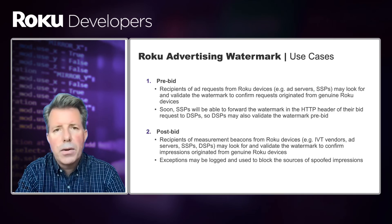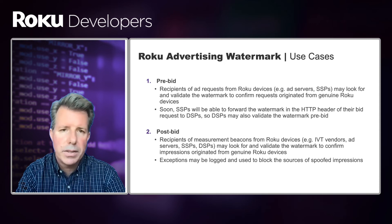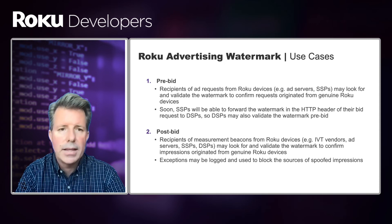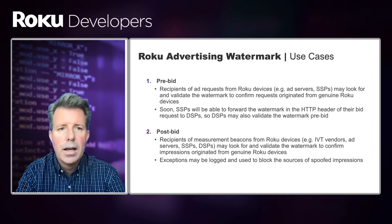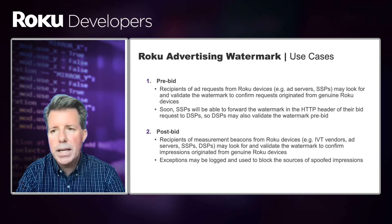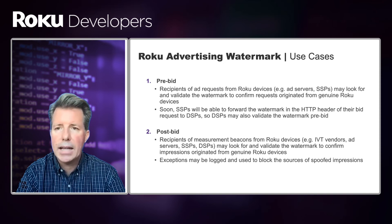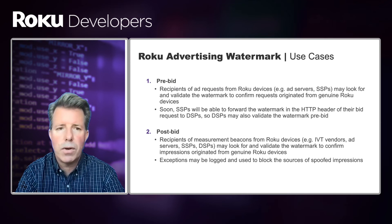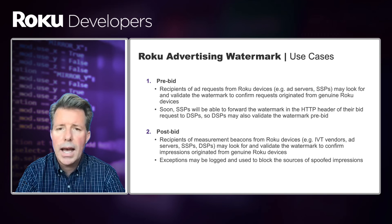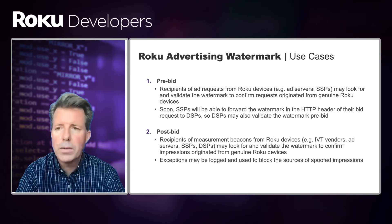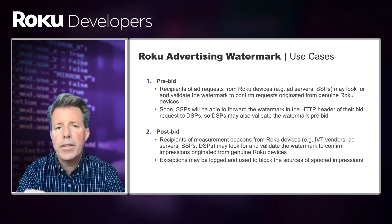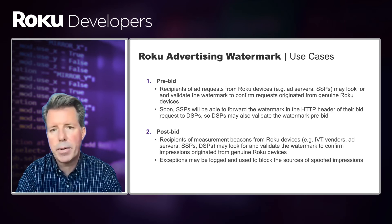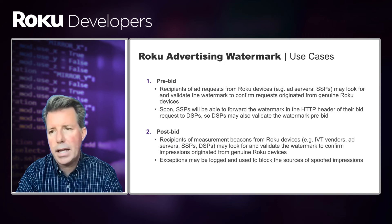What are the use cases for the Roku advertising watermark? There are two primary use cases: pre-bid and post-bid. In the pre-bid scenario, recipients of ad requests from Roku devices — ad servers, SSPs, et cetera — can look for and validate the watermark to confirm that the ad request originated from genuine Roku devices. SSPs will also be allowed to forward the watermark in the HTTP header of their bid request to DSPs, so DSPs or other downstream recipients may also validate the watermark pre-bid.